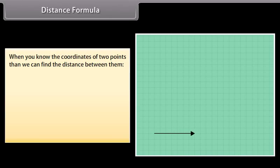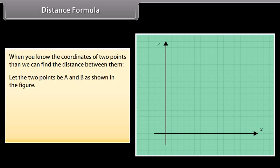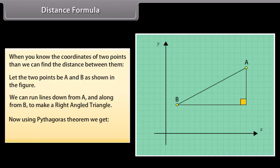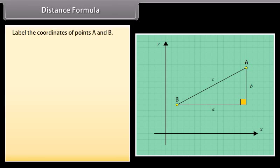Distance formula. When you know the coordinates of two points, we can find the distance between them. Let the two points be A and B as shown in the figure. We can run lines down from A and along from B to make a right-angled triangle. Now using Pythagoras theorem, we get A squared plus B squared is equal to C squared.